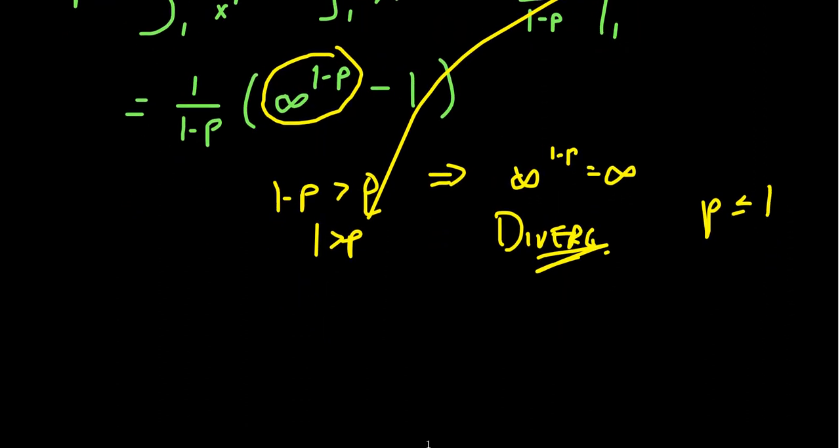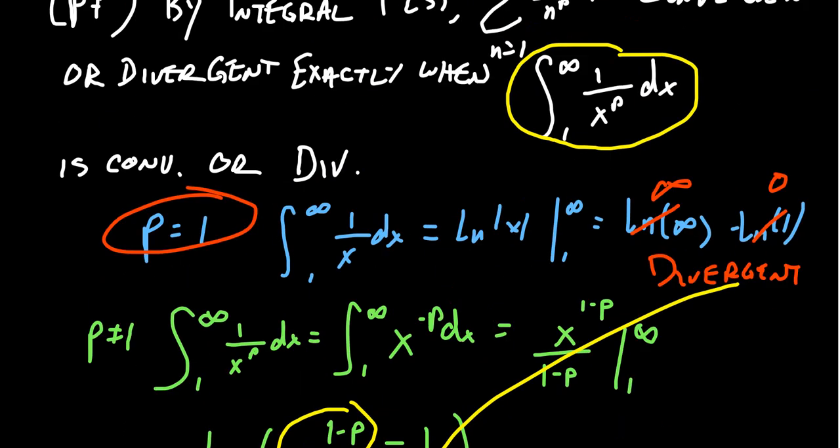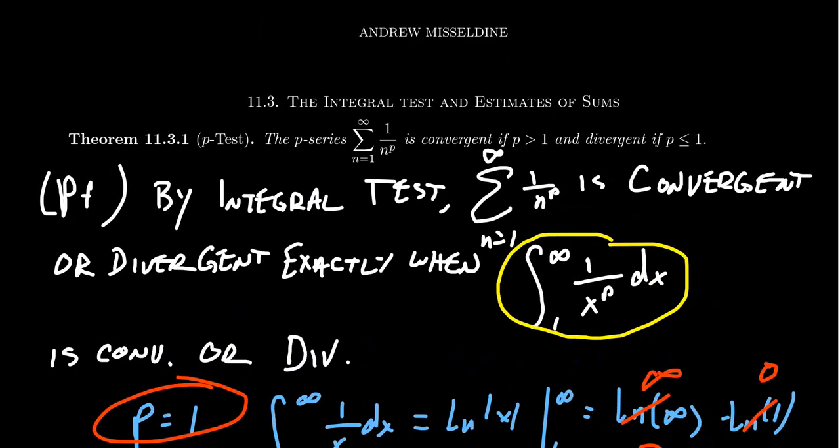On the other hand, if 1 minus p is less than 0, then infinity is raised to a negative power. We can think of this as 1 over infinity to the p minus 1, which equals 0, so the integral converges. Since 1 minus p less than 0 implies p greater than 1, we get convergence. Therefore, the p-series sum of 1 over n to the p is convergent when p is greater than 1 and divergent when p is less than or equal to 1. It's a very simple but very powerful test.